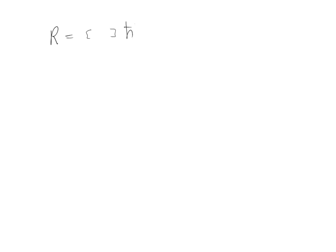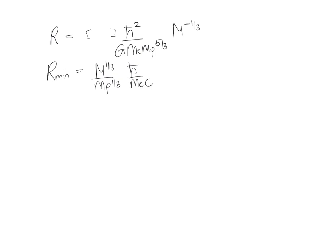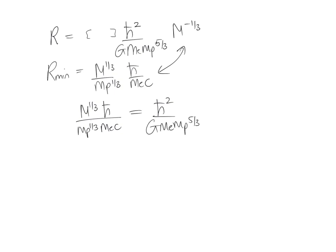Now let's set the general mass-radius relationship equal to the minimum radius condition. The general radius is some number times h-bar² over (G m_e m_p^{5/3}) times M^{-1/3}. The minimum radius when electrons approach the speed of light is M^{1/3} over m_p times h-bar over (m_e c). Setting these equal gives M^{1/3} h-bar over (m_p m_e c) equals h-bar² over (G m_e m_p^{5/3}) times M^{-1/3}.